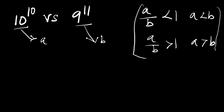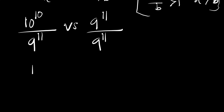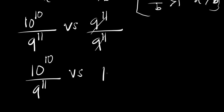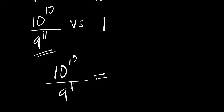We will apply this analogy. We start by dividing 10 to the power of 10 by 9 to the power of 11 versus 9 to the power of 11 divided by 9 to the power of 11. The right side cancels to 1, so we concentrate on 10^10 divided by 9^11.